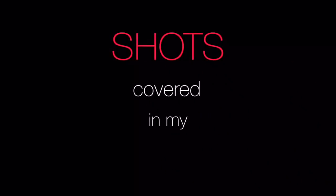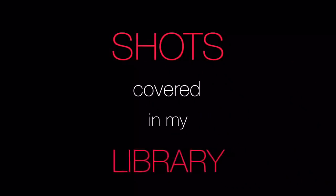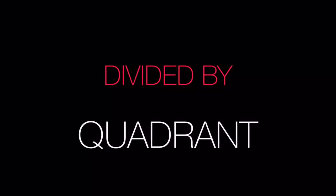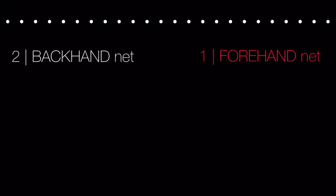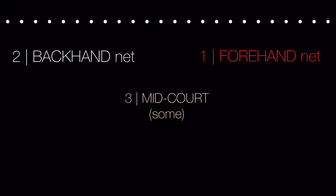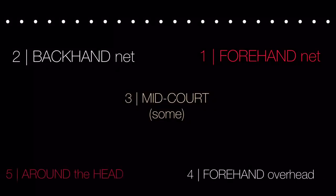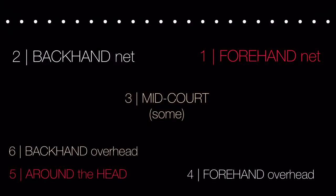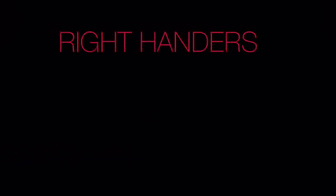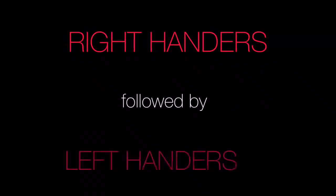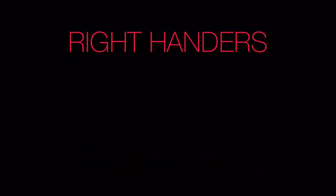In this video you're going to see me demonstrate the shots you can play in badminton. The only shots not covered are the backhand defense and the short serve. I've divided the shots by quadrant: first the forehand net, then the backhand net, then the midcourt, the forehand overhead, the around the head, and finally the backhand overhead. I've made this video for both right handers and left handers, starting with the right handers.